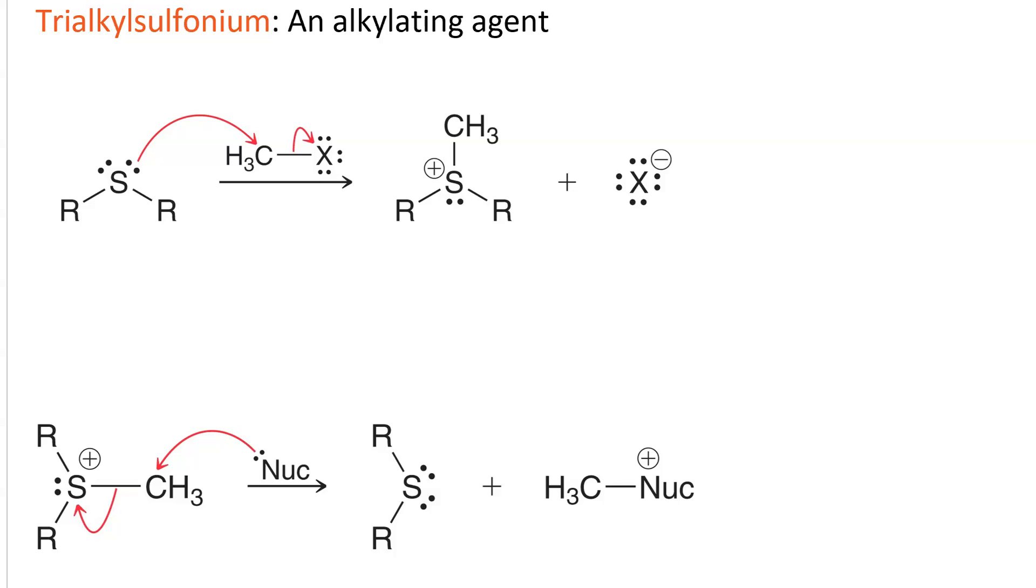I can make trialkyl sulfonium. This is trialkyl sulfonium. Sulfonium because it's got a cation on the sulfur. Trialkyl because there are three R groups.